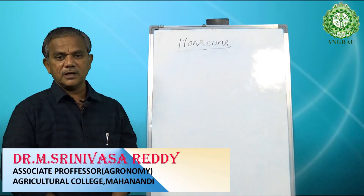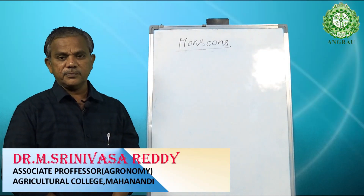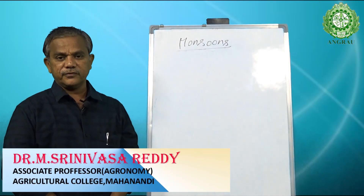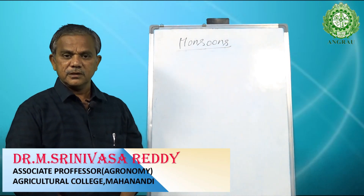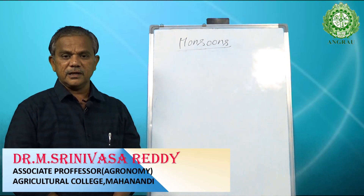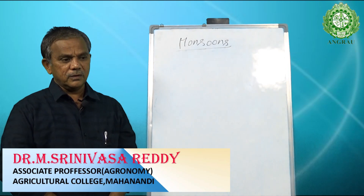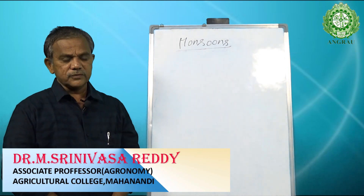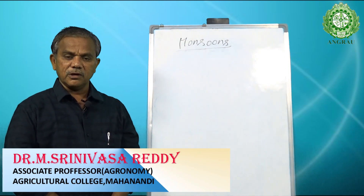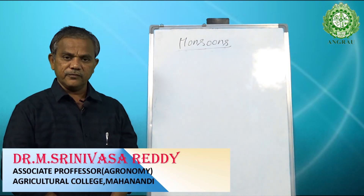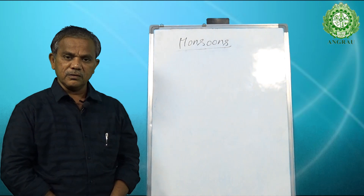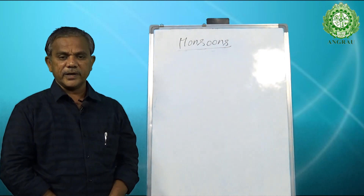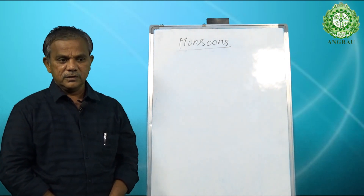Monsoons are one of the most important forms of rainfall or precipitation occurring in our country. We have three forms of rainfall: convective rainfall, orographic rainfall, and monsoon pattern of rainfall.